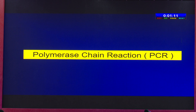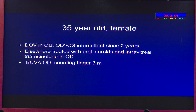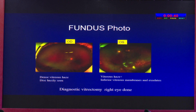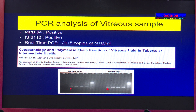Now coming to the molecular biology section — this is cutting-edge diagnosis. Report is ready within 12 to 24 hours. Infectious etiology can be elegantly demonstrated; positive control should be positive and negative control should be negative, indicating high sensitivity and specificity. A 35-year-old female treated with oral steroids and intravitreal triamcinolone with visual acuity counting fingers at 3 meters had vitreous cells in one eye and exudates in the other. Diagnostic vitrectomy revealed large clumps of lymphocytes and a granuloma. To establish a diagnosis, PCR was done and was positive for MPB-64; IS6110 real-time PCR showed 2115 copies, with MPB-64 and IS6110 regions positive.